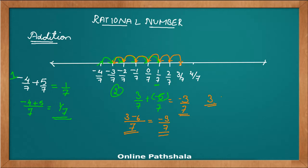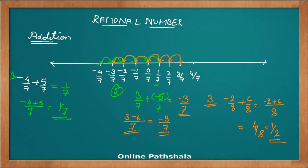Let's take a third example in the same form. We have minus 2 by 8 plus 6 by 8. The denominator is 8, and minus 2 plus 6 gives us 4 by 8. The reduced form of 4 by 8 is 1 by 2. That is how we add rational numbers using a number line and the direct fraction method.